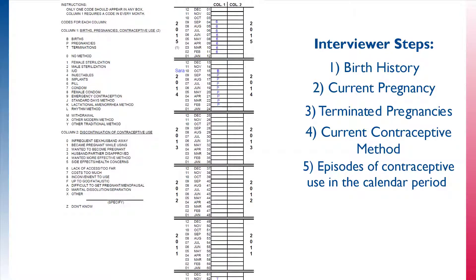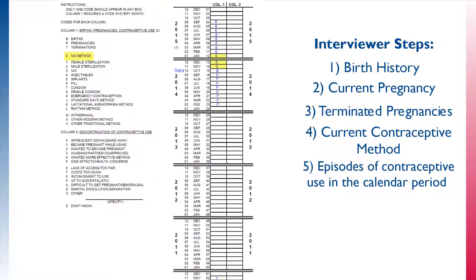Using births and pregnancies as reference points, the interviewer records contraceptive methods used, the duration of the method, and asks for a reason any method was discontinued. As the calendar is filled out by moving backwards in time through contraceptive episodes, the interviewers will fill in gaps before moving on to the previous event. First, the interviewer will ask about the gap between the birth of the child and the most recent episode of contraceptive use. The respondent indicates that no method was used between November 2014 and January 2015.